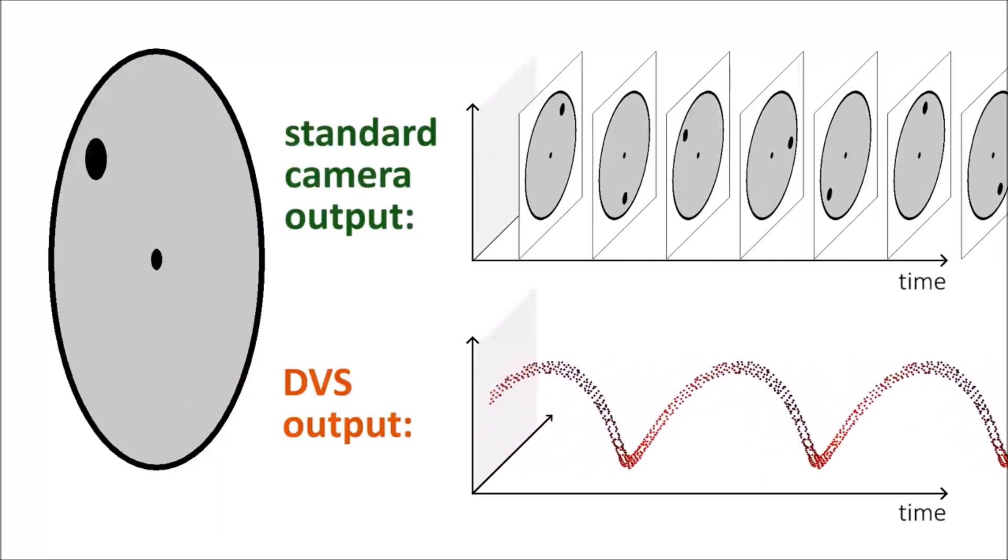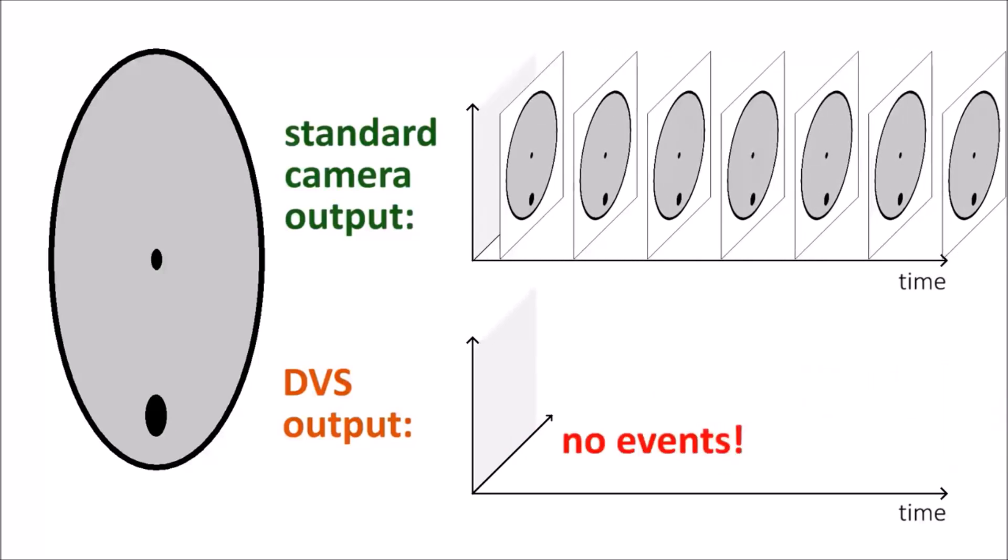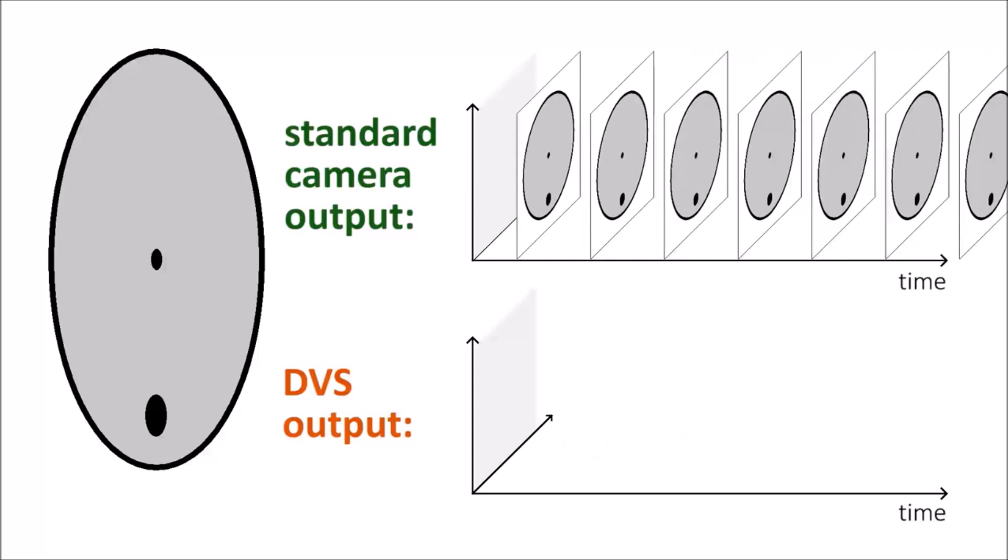As opposed to standard cameras, they do not acquire an entire image frame at the same time, nor do they operate at a fixed frame rate.